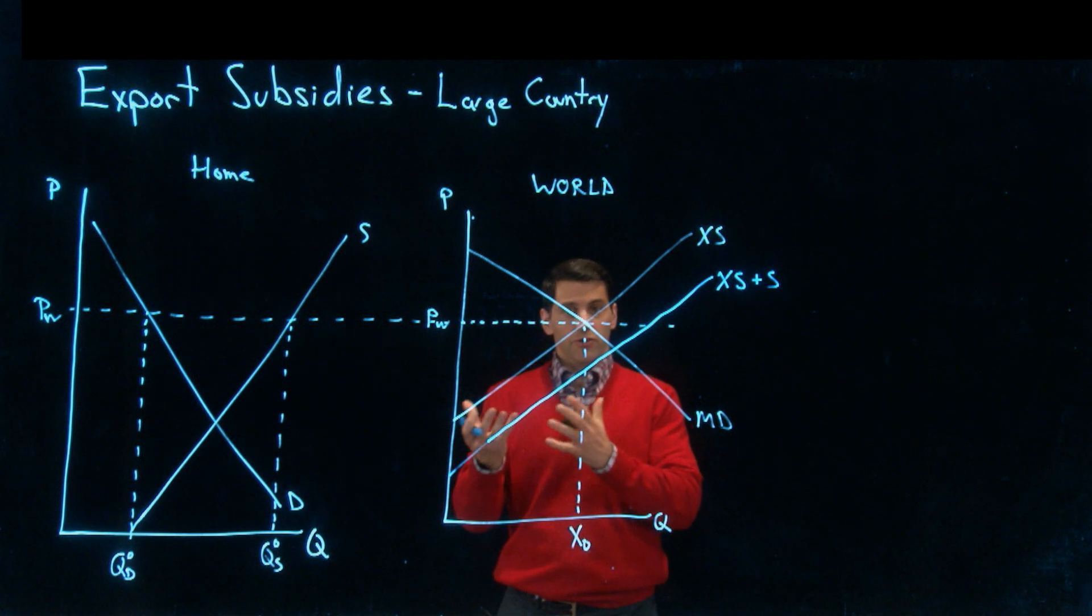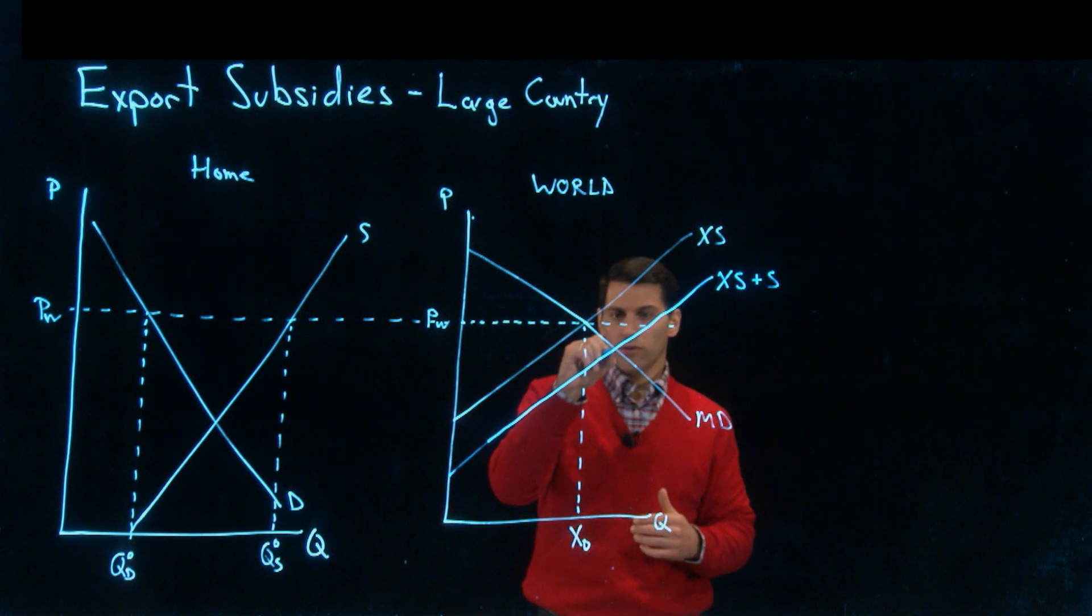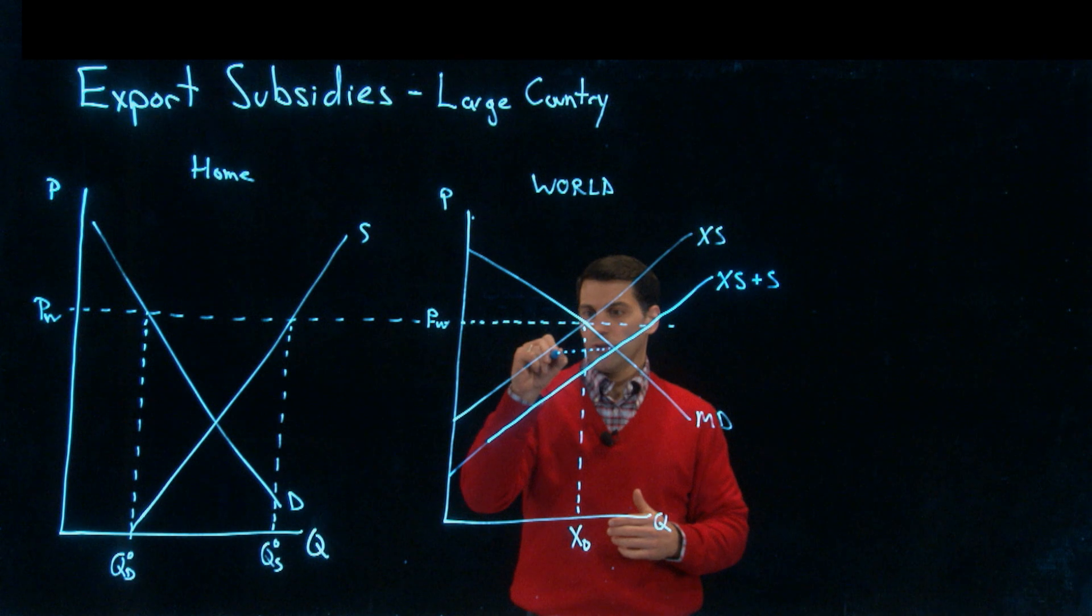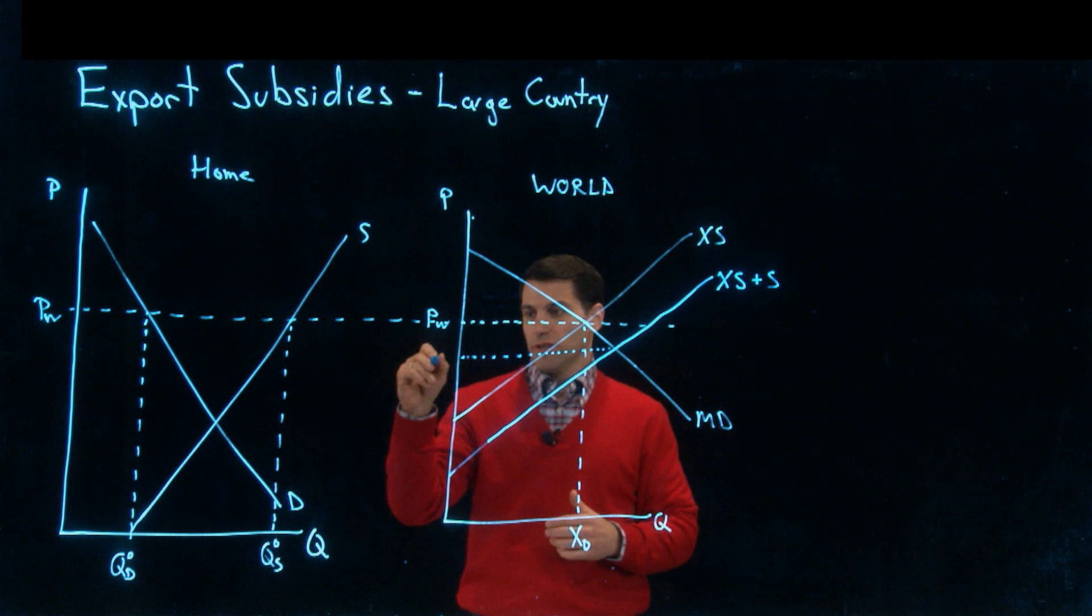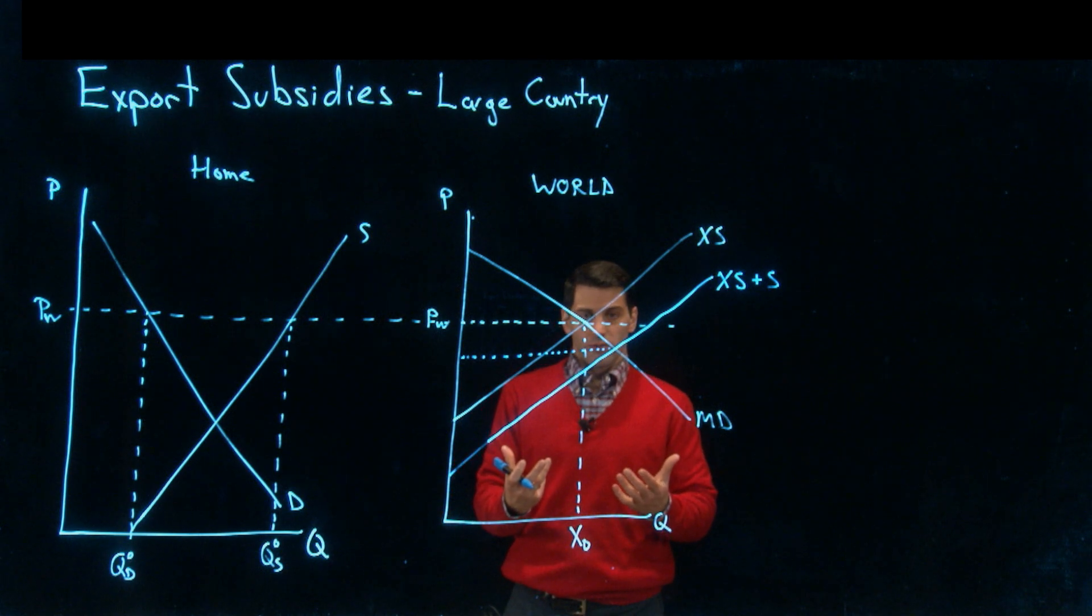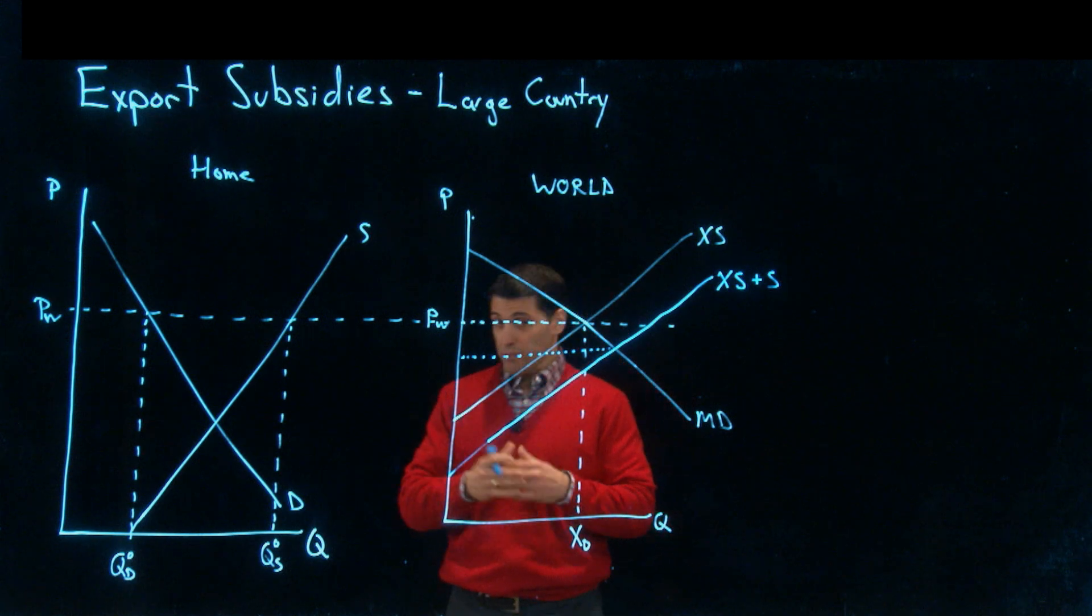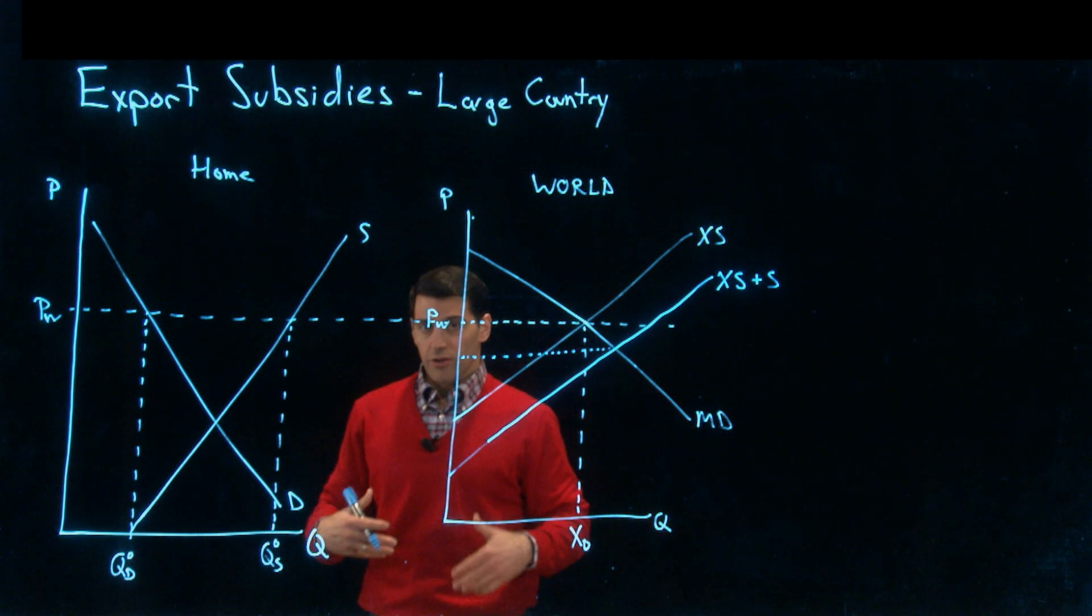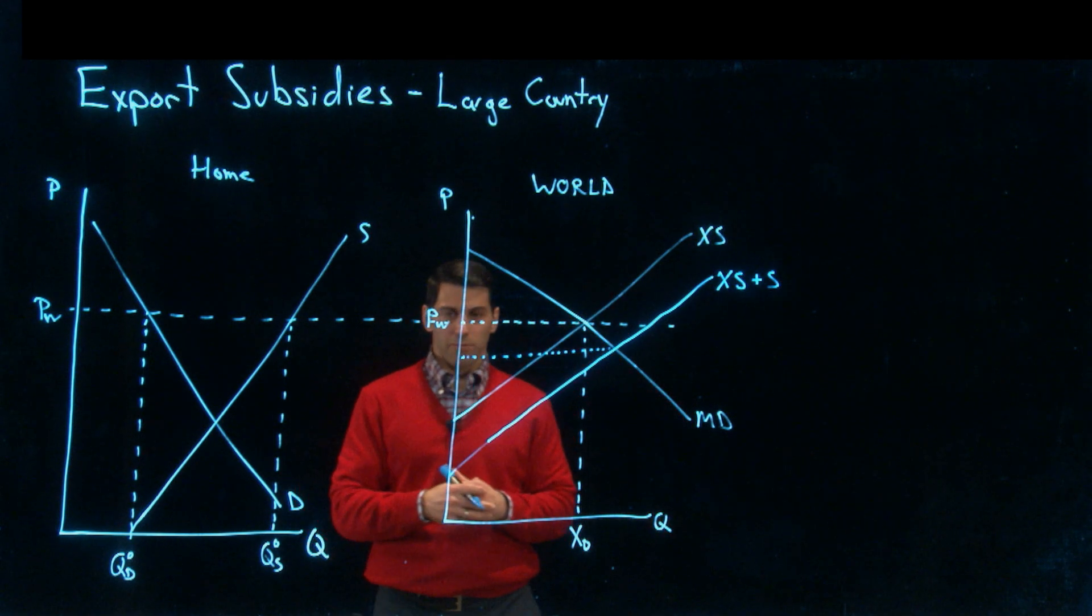What is this going to do? It's going to put downward pressure on the world price. When you increase your supply, you're going to affect the world price. Think about basic supply and demand analysis. You supply more, it's going to put downward pressure on the price.